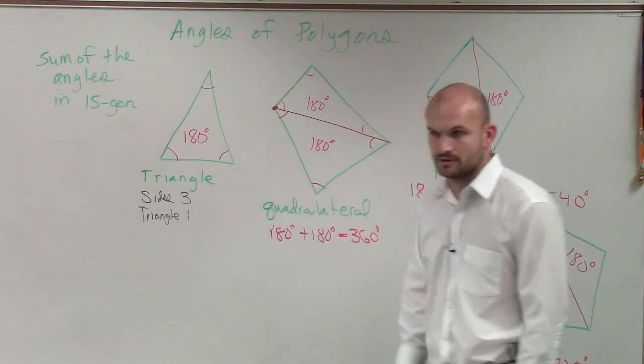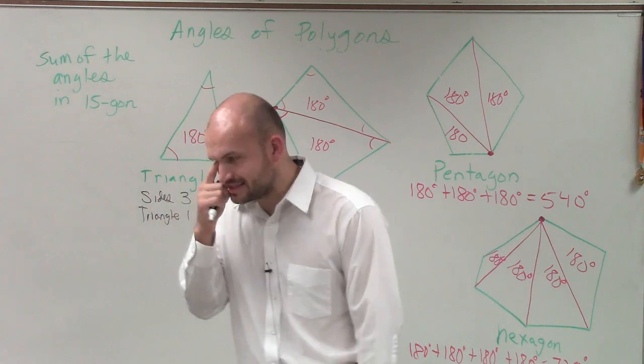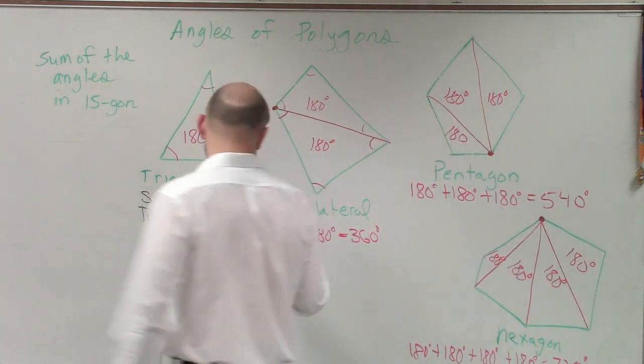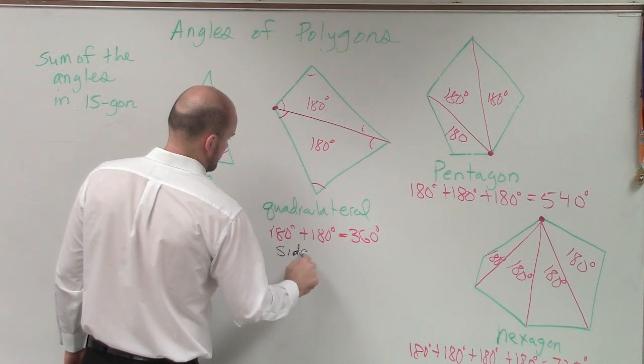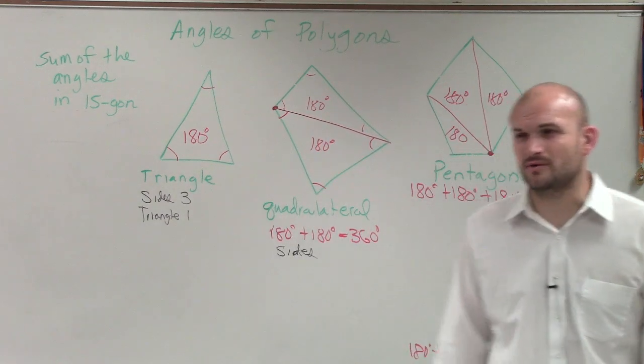Now let's go and look at a quadrilateral. Sierra, how many sides does a quadrilateral have? Four. And how many triangles did we create out of that quadrilateral? Two.